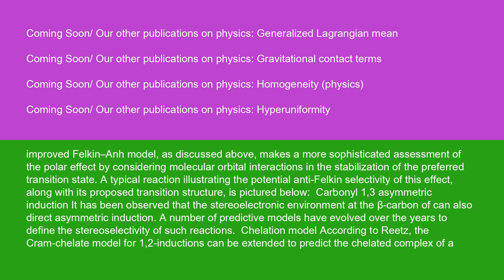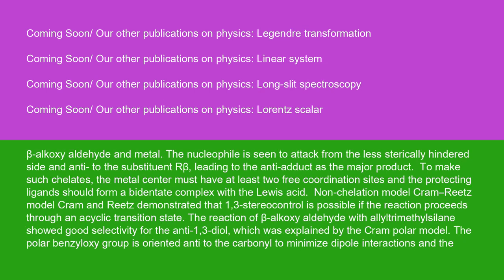Carbonyl 1,3-asymmetric induction: it has been observed that the stereoelectronic environment at the beta carbon can also direct asymmetric induction. A number of predictive models have evolved over the years to define the stereoselectivity of such reactions. Chelation model according to Reetz: the Cram chelate model for 1,2-inductions can be extended to predict the chelated complex of a beta-alkoxyaldehyde and metal. The nucleophile is seen to attack from the less sterically hindered side and anti to the substituent R-beta, leading to the anti-adduct as the major product.